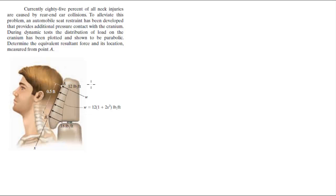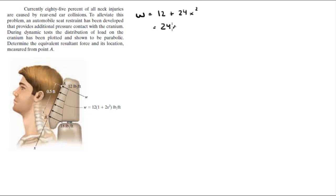To find the resultant force you've got to find the area of this load, and you're given a function. Let's call w equal to the distributed load: 24x squared plus 12 — just to be a little more conventional. So this is the function they're giving you.